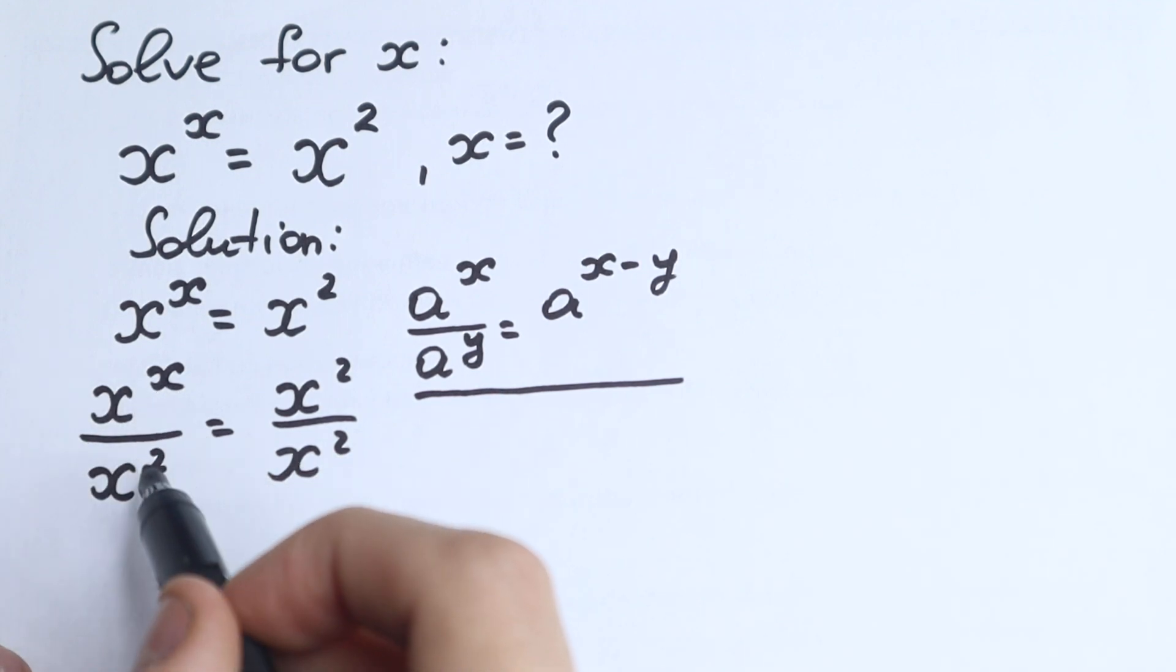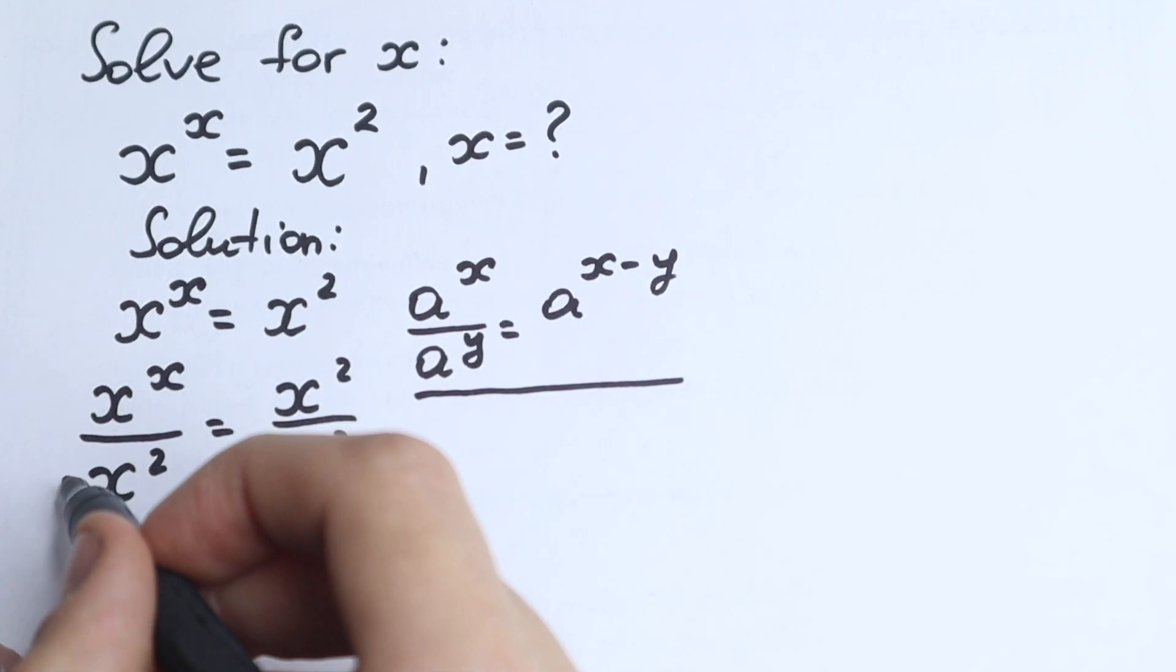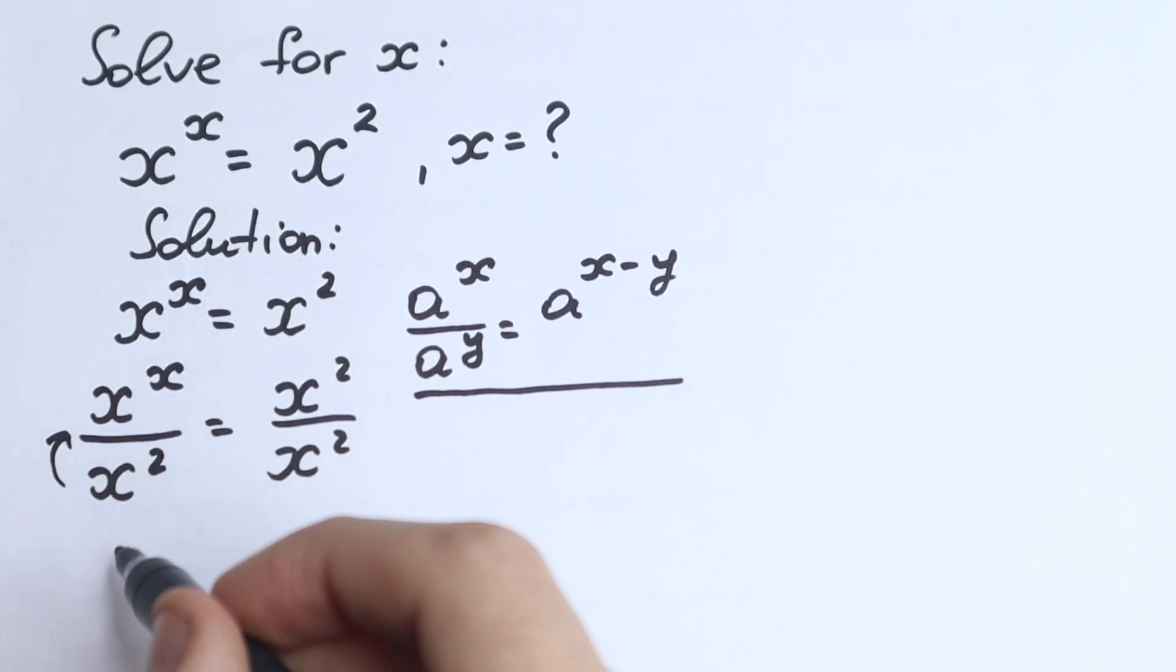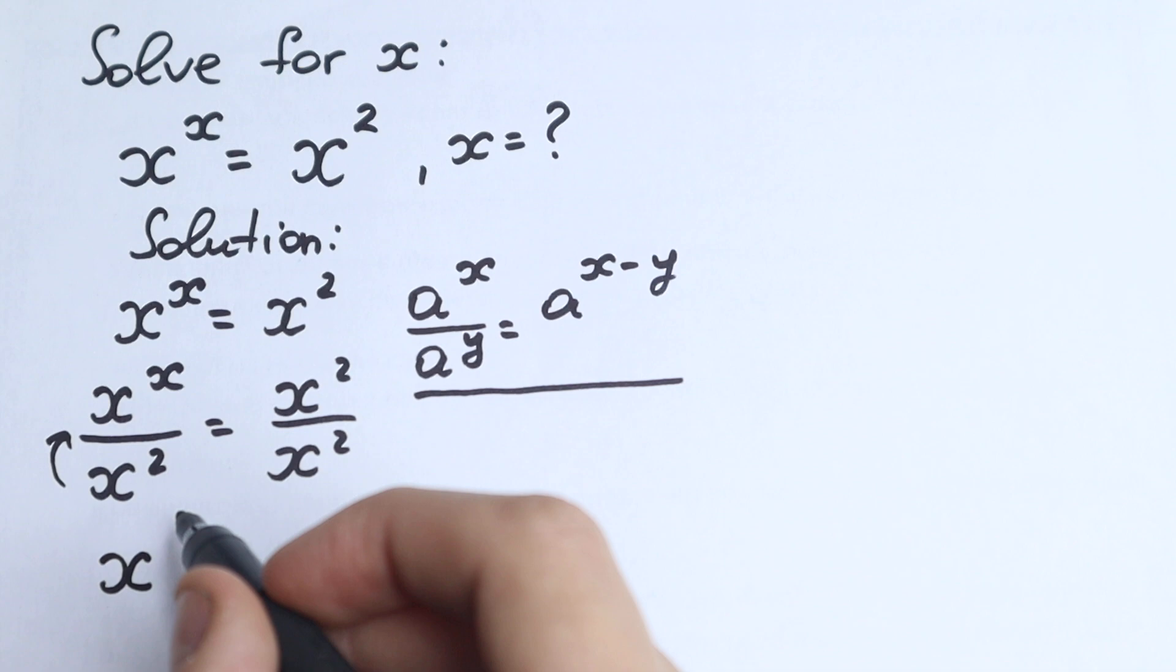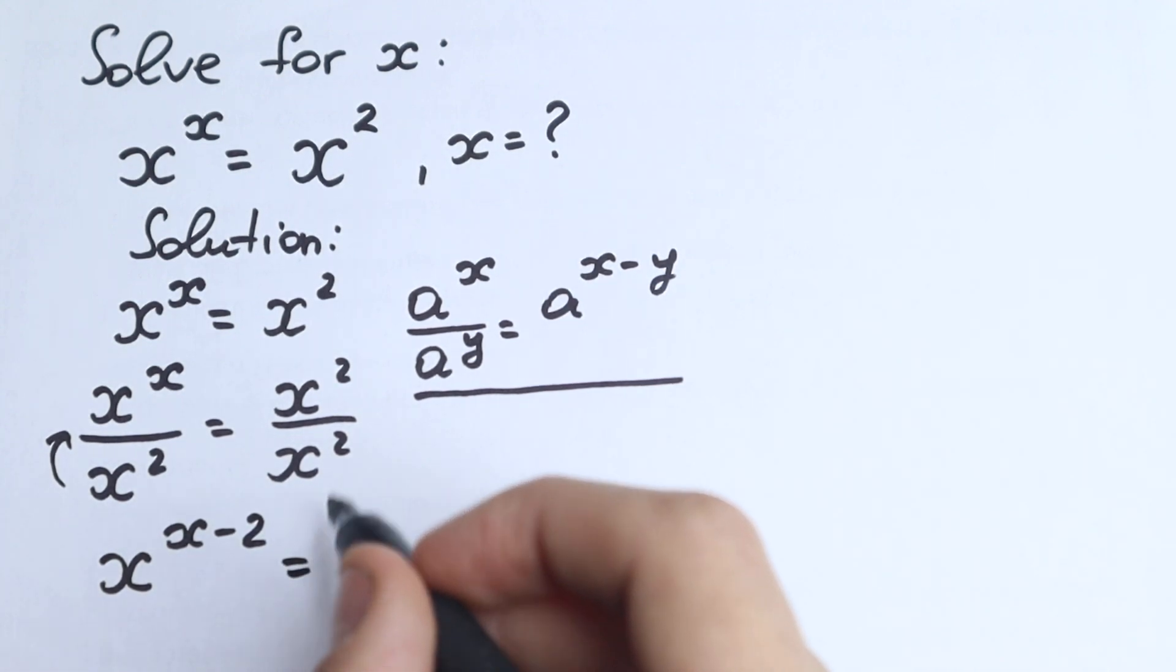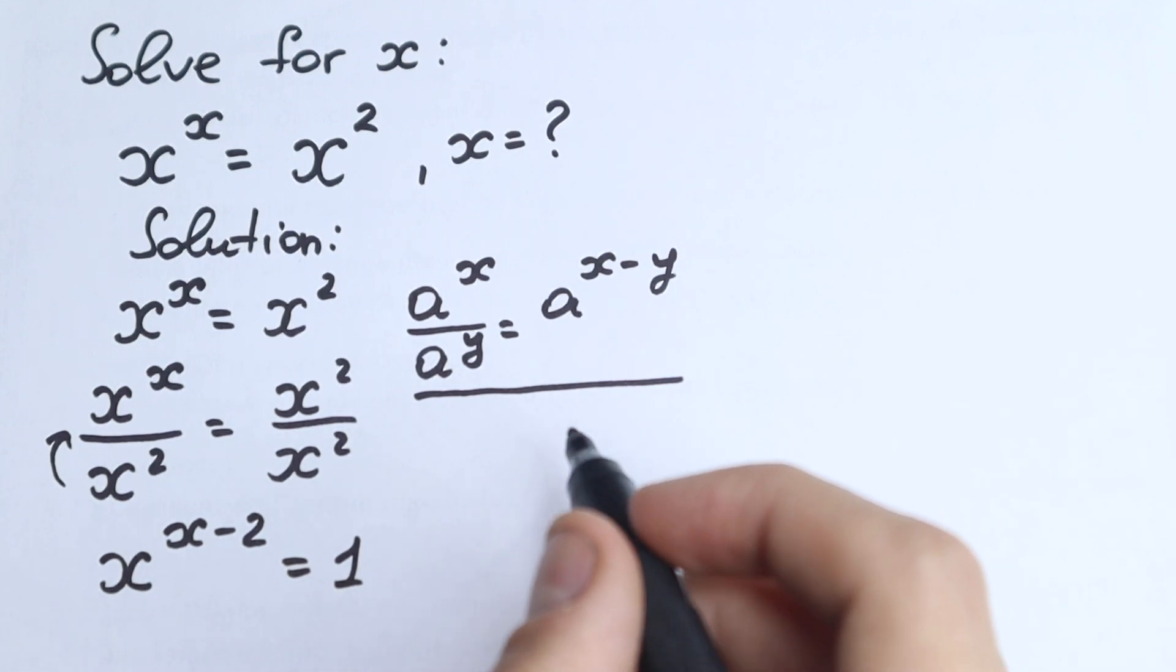We have x to the power x and minus 2, okay? This goes with the minus sign and we have x to the power x minus 2. So we have x to the power x minus 2, okay? Minus 2 equal to x squared over x squared equal to 1. Brilliant. Really great for us.